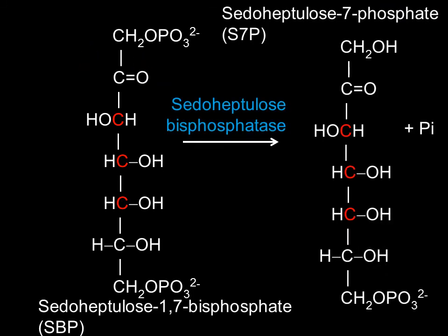Sedoheptulose-1,7-bisphosphate is dephosphorylated by sedoheptulose bisphosphatase to yield sedoheptulose-7-phosphate.